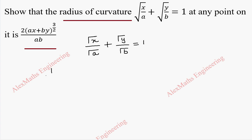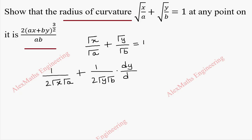Root x differentiation is 1 by 2 root x, and root a is a constant kept as it is. In the same way, root y differentiates to 1 by 2 root y and root b stays as it is. But by chain rule, the differentiation of y is dy by dx, which equals 0 because the differentiation of 1 is 0.